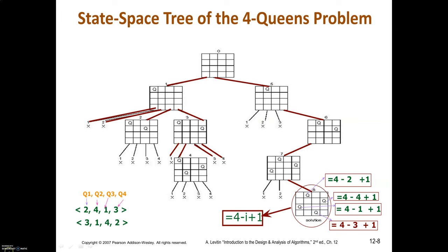With the second queen in the fourth column, we try to place the third queen. The third queen cannot be placed in the first column. The next possibility is the second column. We have now placed three queens such that no two queens are attacking each other. We then try for the fourth queen, but the fourth queen cannot be placed in any column — we have reached a dead end. Backtrack to the previous node. The second and fourth columns for the third queen are both ruled out. Backtrack further — all possibilities with the first queen in the first column are exhausted. Backtrack to the initial state.